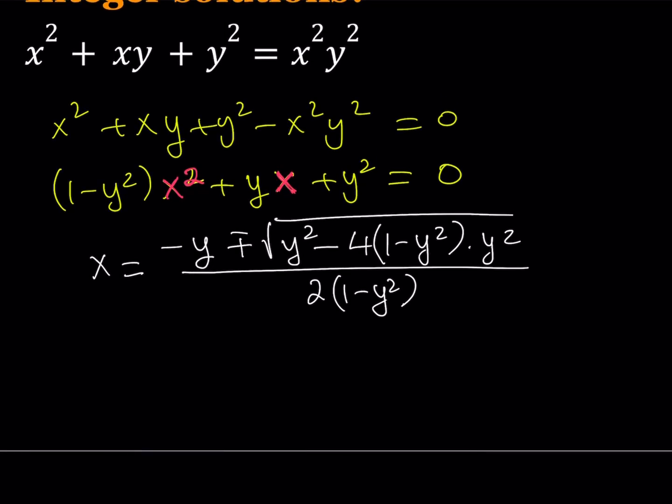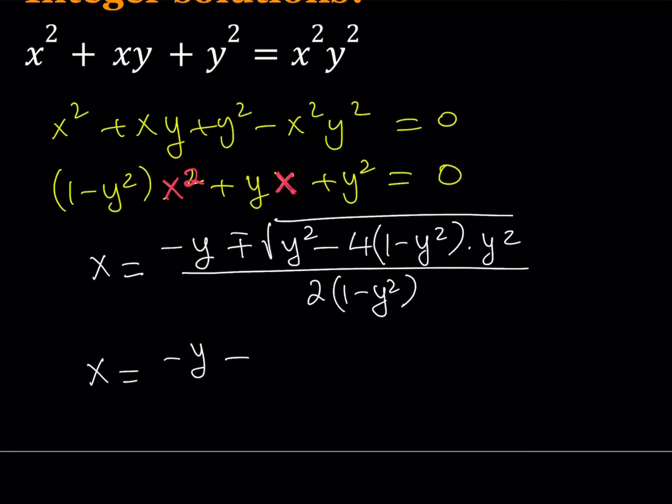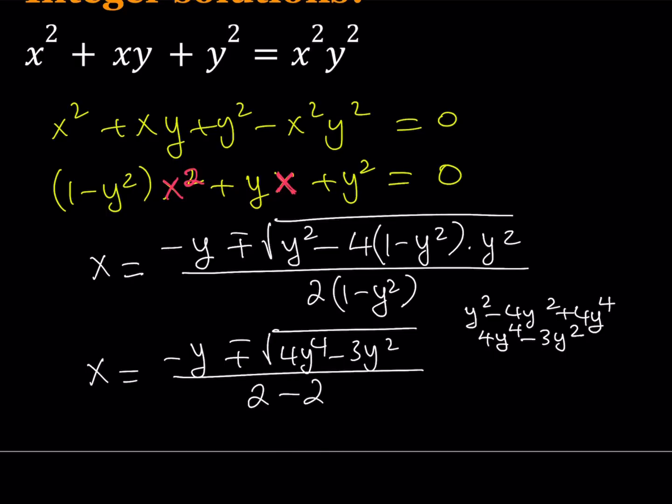Remember, x and y are supposed to be integers. So we can look at what's happening inside the radical. We have y squared minus 4y squared times 1 minus y squared. I have negative 4y squared and then negative 4y squared multiplied by negative y squared gives us 4y to the fourth power. So this is equivalent to 4y to the fourth minus 3y squared. That is going to be under the radical, and all of that is divided by 2 minus 2y squared.